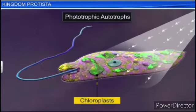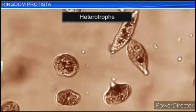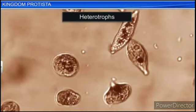Though euglenoids are photosynthetic in the presence of sunlight, when deprived of sunlight they behave like heterotrophs, depending on other organisms by predating on smaller organisms. Interestingly, the pigments of euglenoids are identical to those present in higher plants. The example is Euglena, which shows both animal and plant characters.